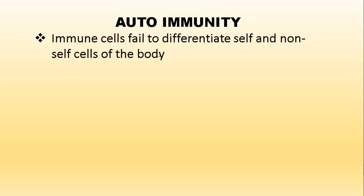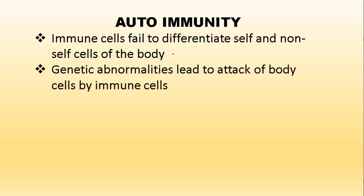Autoimmunity: our body has the ability to differentiate self and non-self cells. That is why the B and T lymphocytes attack only the antigens and do not attack our body cells. But sometimes the B and T lymphocytes fail to identify which one belongs to the body and which one does not. They fail to differentiate, and as a result the immune cells start attacking their own body cells, leading to many problems. This happens due to wrong signaling and genetic abnormalities — the genes of the immune cells are not functioning properly, and they fail to recognize which cells they should be attacking.